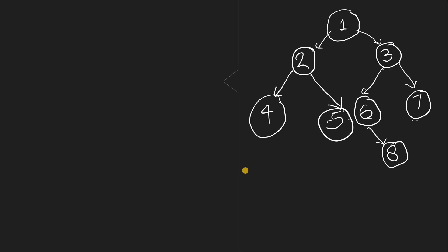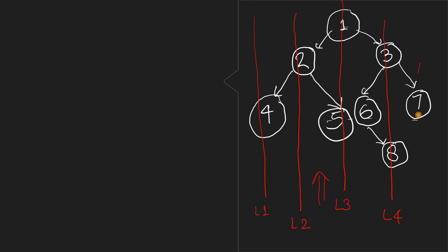So what does the bottom view of the binary tree mean? Suppose we are given a binary tree and we look from the bottom side. We draw vertical lines — L1 through L5 — just like we did for vertical order traversal and the top view. The vertical order traversal for this tree gives us: L1 has 4, L2 has 2, L3 has 1 and 5 and 6, L4 has 3 and 8, and L5 has 7.